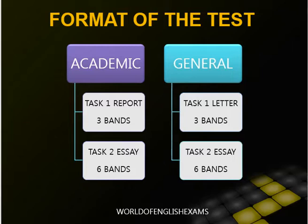Generally, people take more time to write an essay and more emphasis is laid on essays. For general training test takers, you write a letter as part of Task 1, which carries 3 bands. Similarly, general students also write an essay carrying double the weightage — that is 6 bands. Both tasks must be attempted in order to get a score, so proper planning is required.